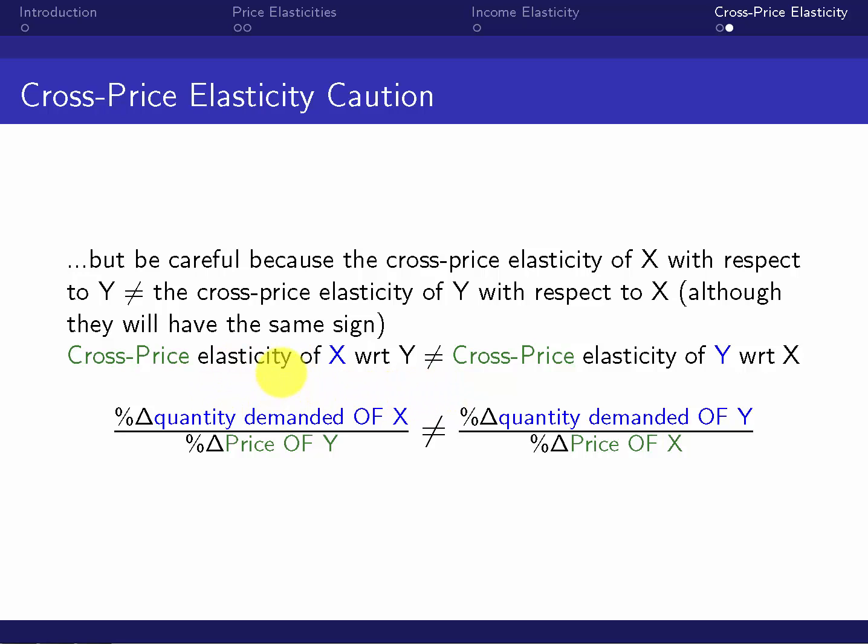So this one, we have the quantity demanded of X, because that comes after this of. Over here, we have the quantity demanded of Y on top. And on the bottoms here, we have the price of the other good.